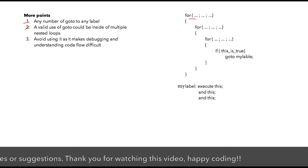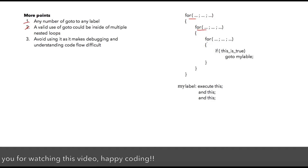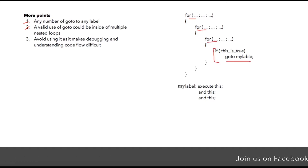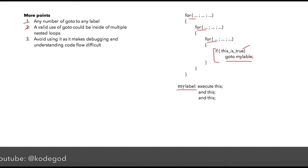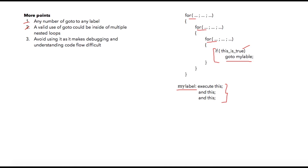Second, a valid use case scenario for the goto keyword could be when you have multiple for loops. Based on some condition you can use a label, so if that condition is true the compiler will be redirected to that line directly and those statements will be executed. In this case we are breaking normal program execution with an exclusive condition and using the goto keyword.